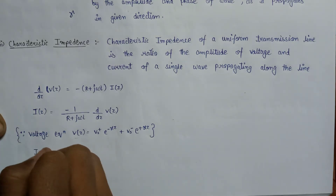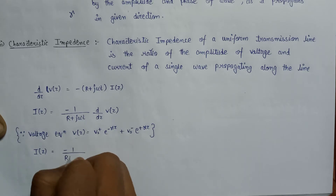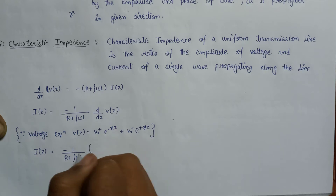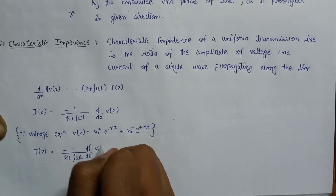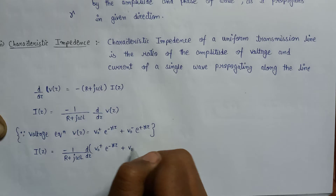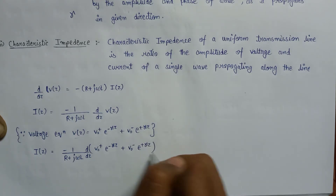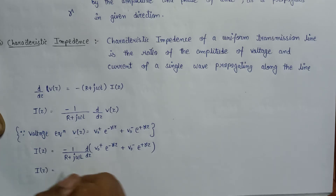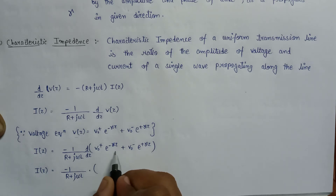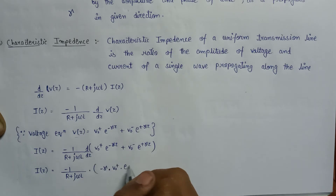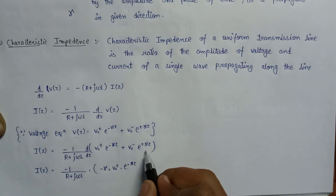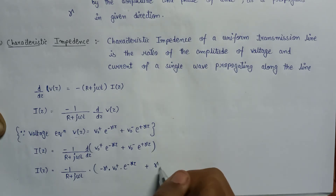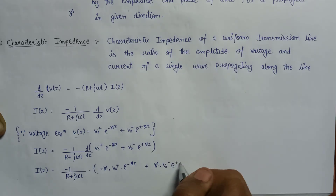We get I(z) equals minus 1 over (R + jωL) times d/dz of [V₀⁺ e^(−γz) + V₀⁻ e^(+γz)]. Differentiating this whole term: the differentiation of e^(−γz) gives −γ and of e^(+γz) gives +γ, so we get the derivative terms with V₀⁺ and V₀⁻ accordingly.